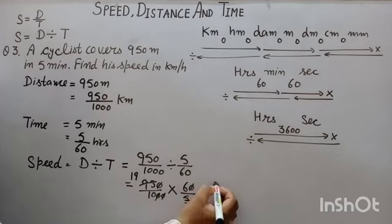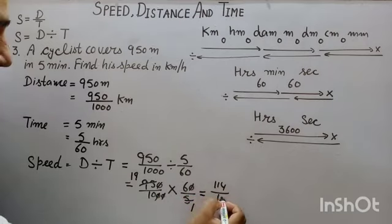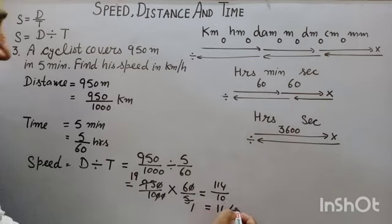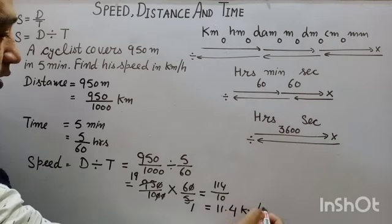Now multiply 19 by 6. Is equal to 114 upon 10. With the help of decimal, our answer will become 11.4 km per hour.